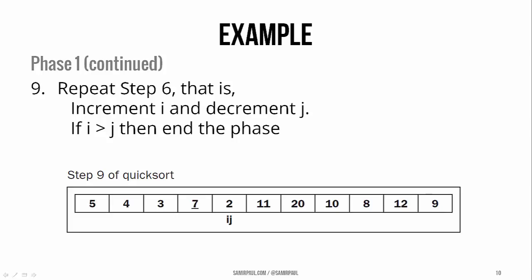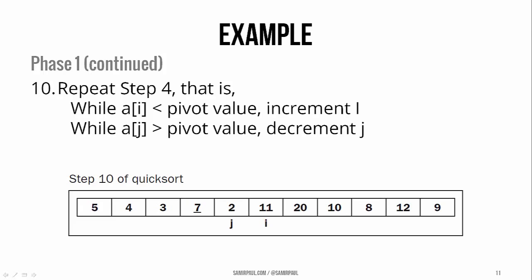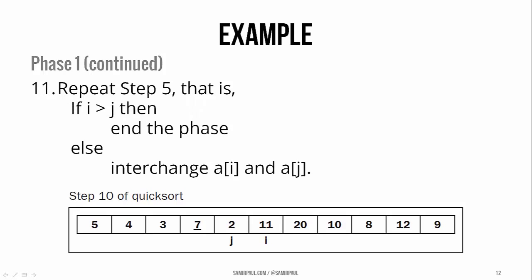Once again, we'll go back to step 6. We'll increment i, decrement j. And in this case, i is still not greater than j, so we don't yet end the phase. Once again, we'll keep incrementing i and decrementing j until we've found values that are less than or greater than the pivot value respectively. And as you can see, we've hit our stopping condition because i and j have crossed. j is now to the left of i.